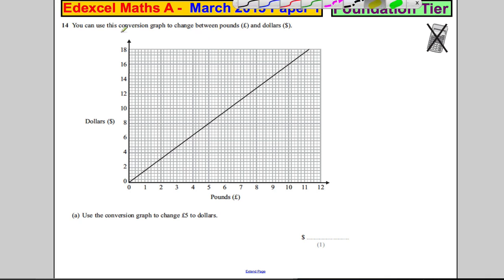In question 14, you're told you can use this conversion graph to change between pounds and dollars. Use the conversion graph to change 5 pounds to dollars. Make sure you're along the pounds axis - it's 5 pounds, so you mark yourself 5 here. It's very important you draw the lines.